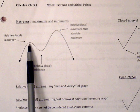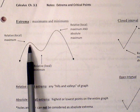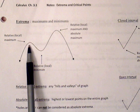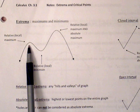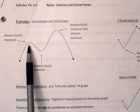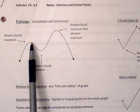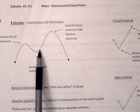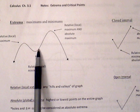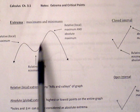An easy way to spot a relative or local max or min is simply to visually see if it's a hill or valley of a graph. If it's a hill or valley, then we know it's going to be a relative max or relative min.